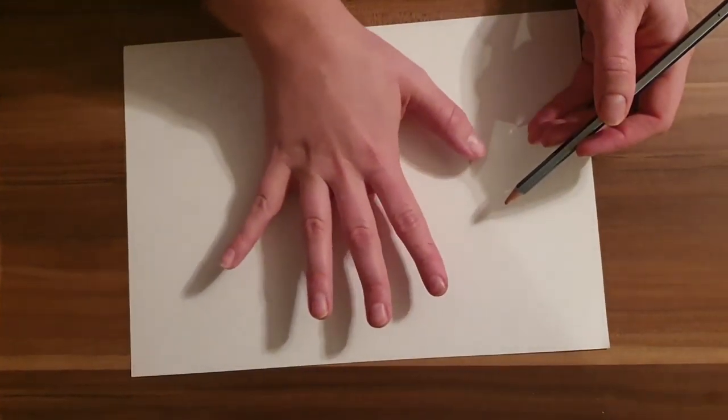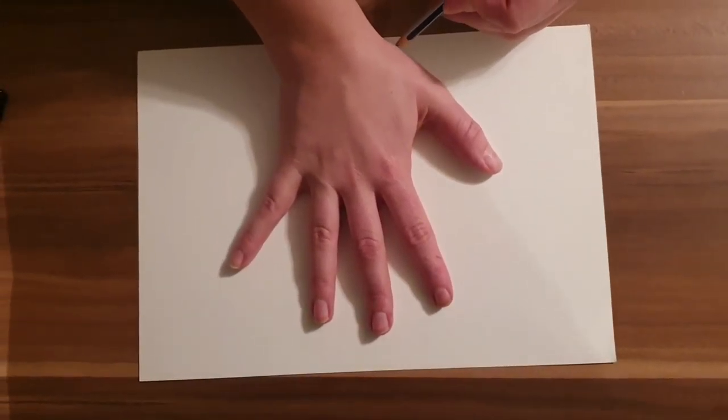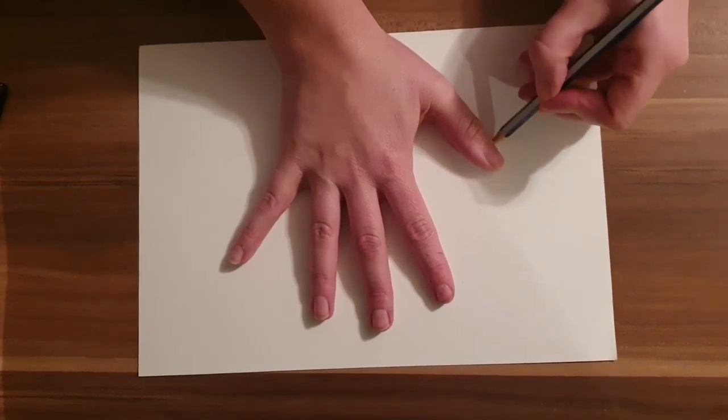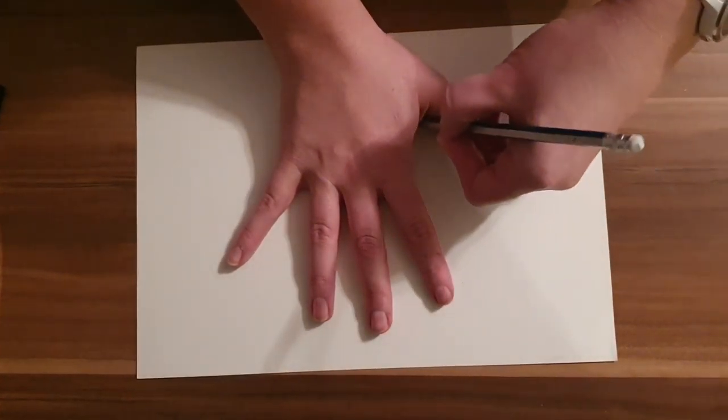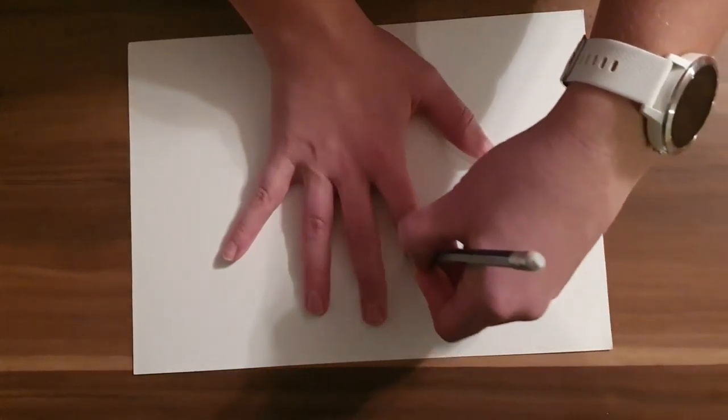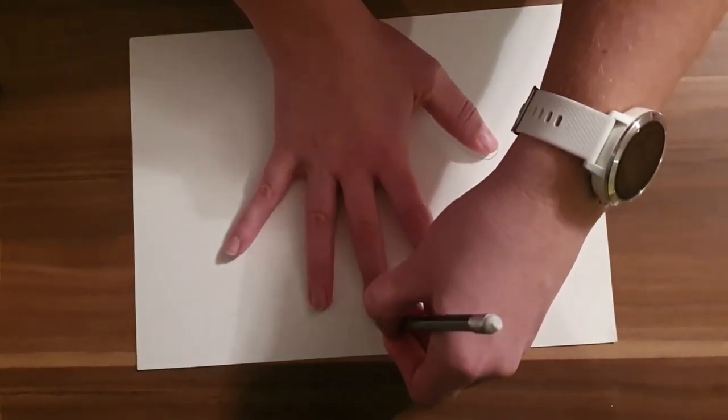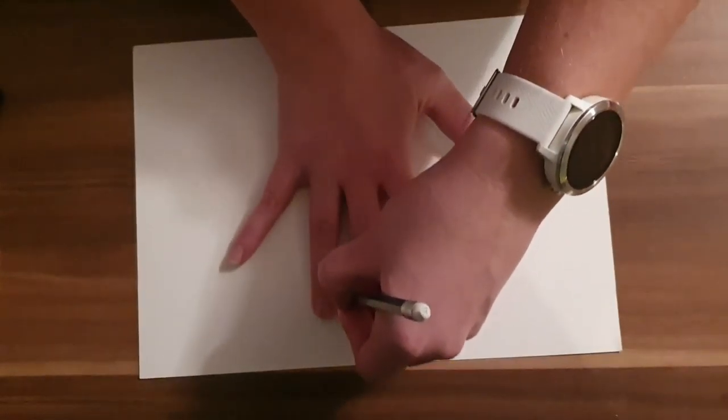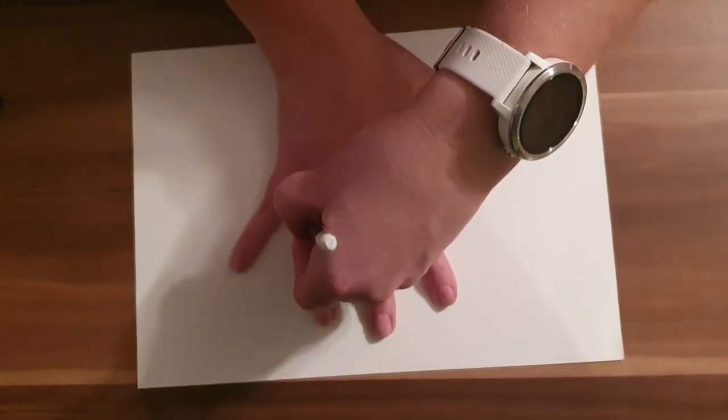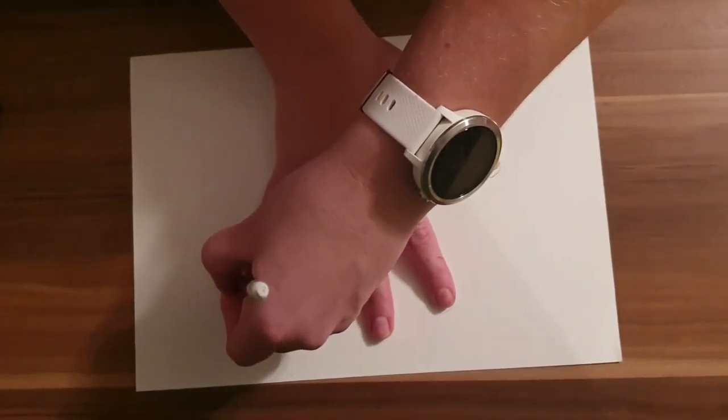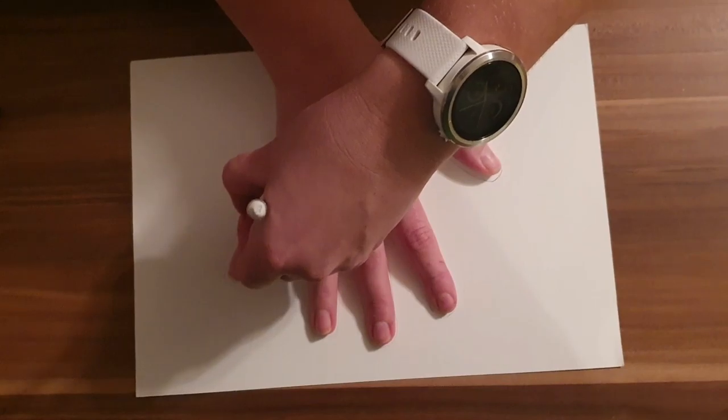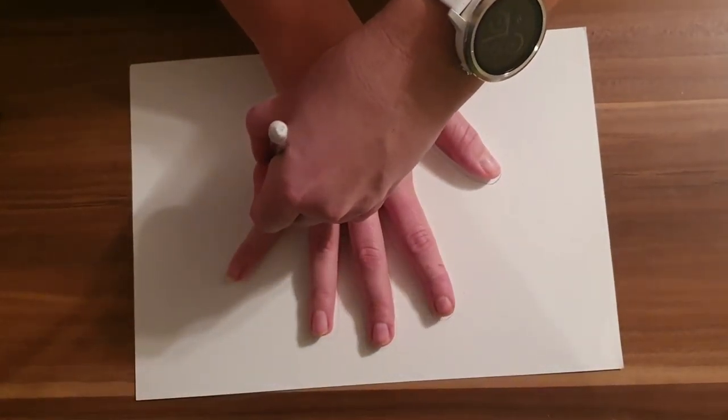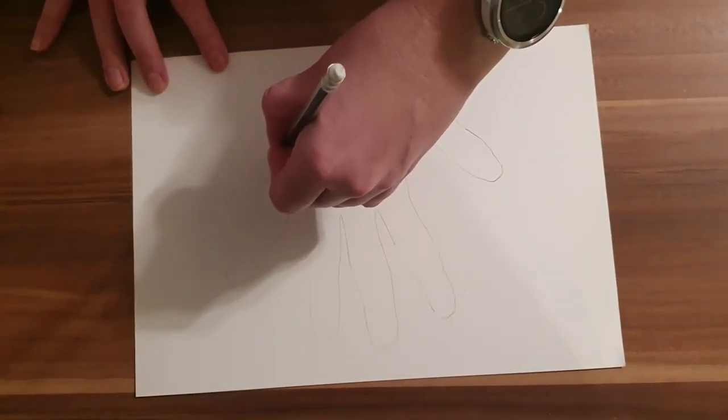Take your time, go very slowly, and when you get up here after your baby finger, I want you to lift your hand and you're just going to draw a little tail and then bring it back up around like this.